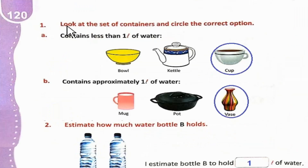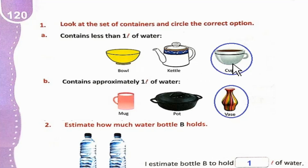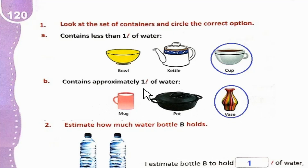Page 120, Question 1 — look at the set of containers and circle the correct option. Part A contains less than 1 liter of water. کپ میں 1 liter سے کم پانی آتا ہے، so circle the cup. Part B contains approximately 1 liter of water. mug میں بہت کم آتا ہے، pot میں زیادہ بھی آ سکتا ہے، تو ہم vase کو circle کریں گے.